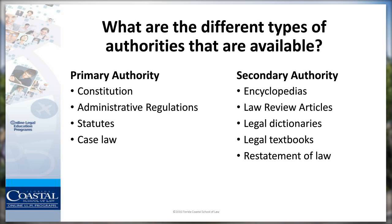Now this is when it gets a little more tricky. When we look at primary authority, we need to know that sometimes it's going to be persuasive and sometimes it's going to be mandatory. Mandatory authority is going to refer to cases, statutes, or regulations that the court must follow because it's binding on that court. Thus, if the Supreme Court has made a decision, the lower courts in that jurisdiction are required to follow the decisions from that highest court, or any higher courts within that same jurisdiction.